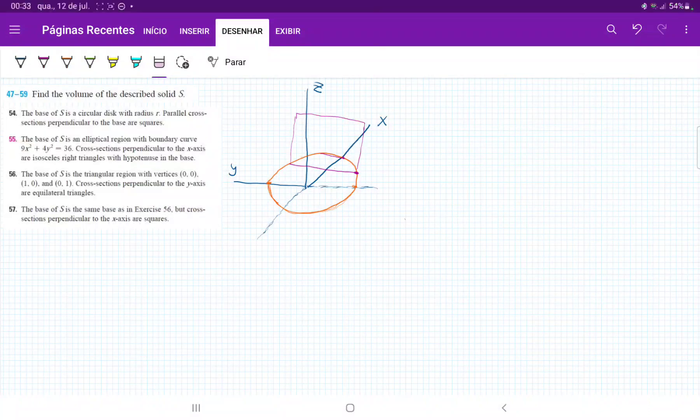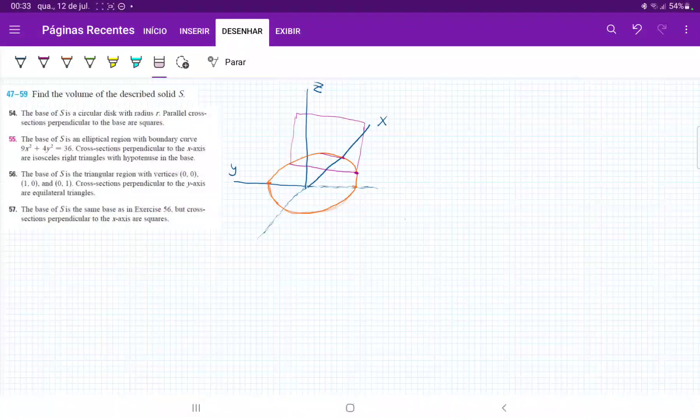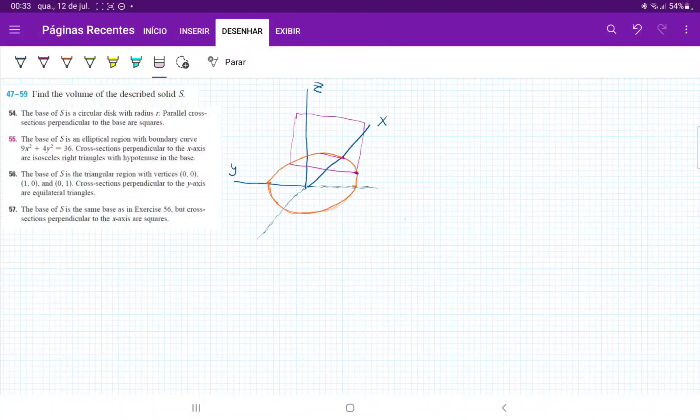For number 54, we need to find the volume of a solid that has a base of a circular disk with radius r, and the parallel cross-sections perpendicular to the base are squares. I've drawn that in, and the radius is going to touch both there and there.